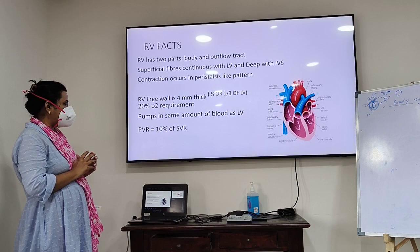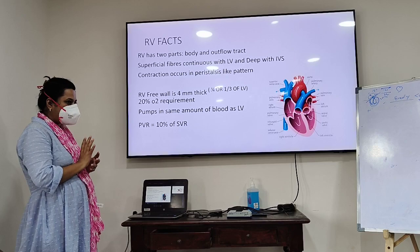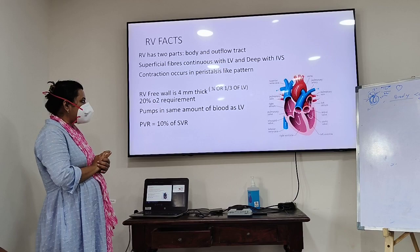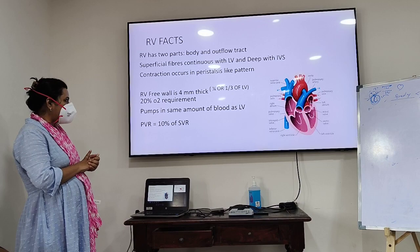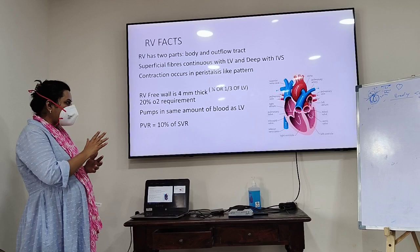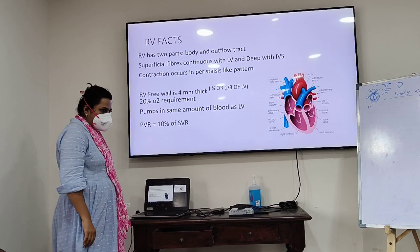There is the RV free wall and the interventricular septum. There is a bellows-like movement of the RV free wall and the contraction happens in a peristalsis-like manner. The RV free wall is around 4 mm thick, which is almost one-fourth to one-third of the left ventricle. It requires 20% of the oxygen requirement. It pumps the same amount of blood as the left ventricle. The pulmonary vascular resistance against the RV is 10% of the systemic vascular resistance.